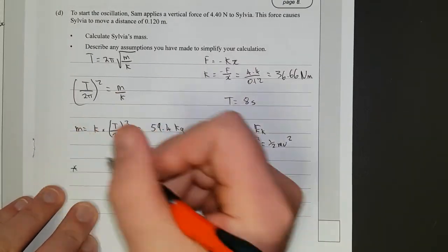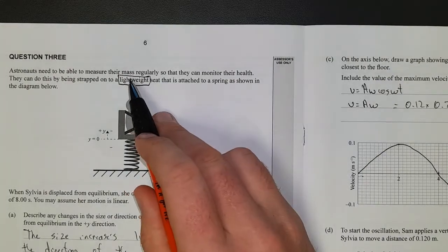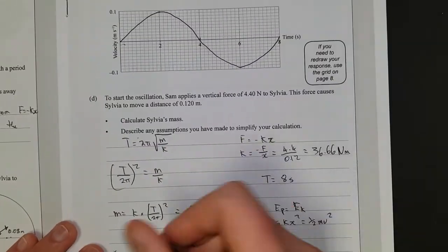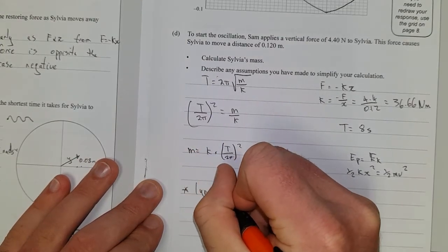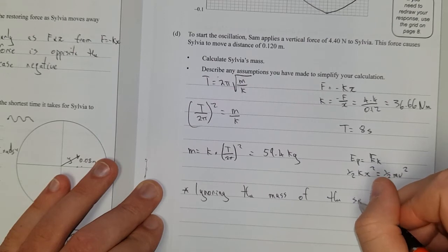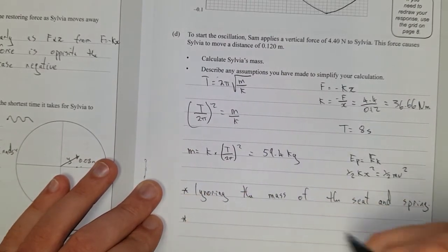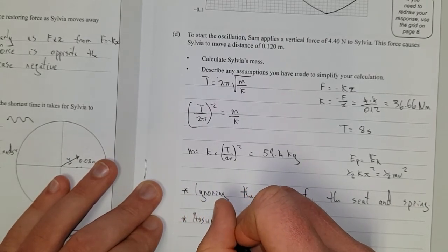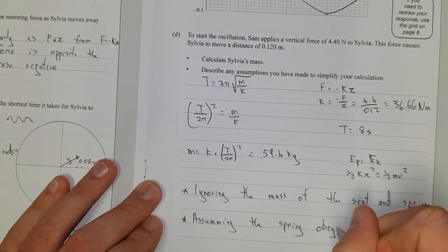So we need to fully answer the question. We found our mass here. Describe any assumptions you have made to simplify your calculation. So this isn't really the mass of Sylvia. This is the mass of Sylvia plus the chair plus the spring. But up here, it says it's a lightweight spring, so we're just assuming, ignoring the mass of the seat and spring. One other little caveat, assuming the spring obeys Hooke's law, because it's always a good thing to put. Because let's be honest, not that many springs do.